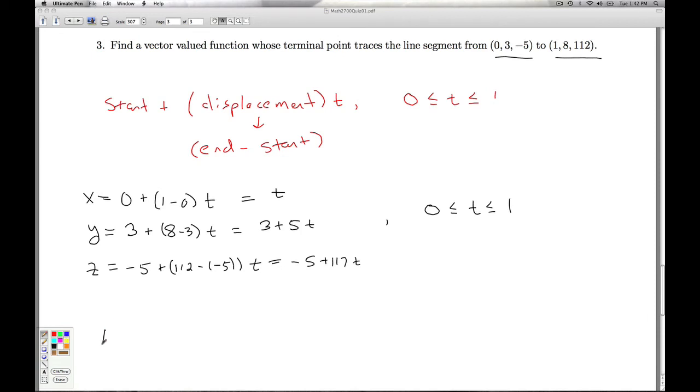So we can get our final answer here. r of t equals in the x component I have t in the y component I have 3 plus 5t and in the z component I have negative 5 plus 117t, t between 0 and 1. Now, how can we check this answer? Well, let's plug in t equals 0. When t equals 0, I get 0, 3, negative 5 which is the point I'm starting at. Let's plug in then t equals 1 and I get 1, 8, 112 which is the point I'm finishing at and everything here is linear. It's a linear relationship so that's going to give me the line I want. So that'll do it then for checkpoint quiz 1.